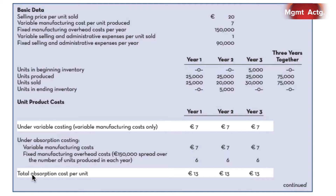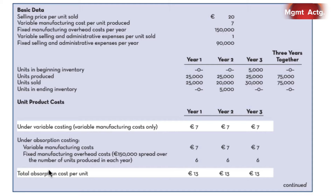That's reflected down here. Total absorption costs per unit are $13. Under variable costing, it's $7 per unit. In the first year, units produced and unit sales will be the same, so we should expect no difference between variable costing and absorption costing.